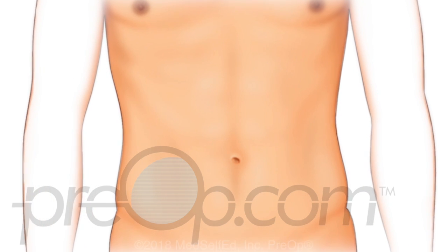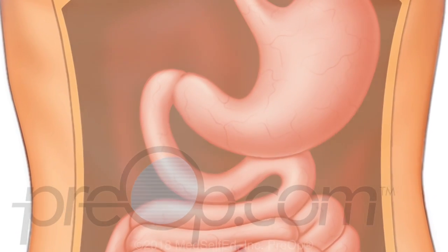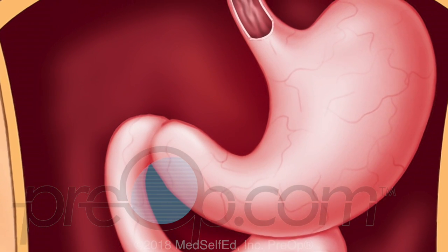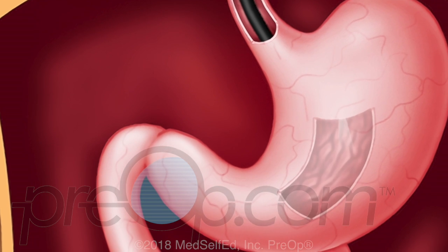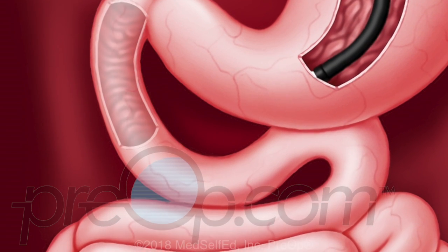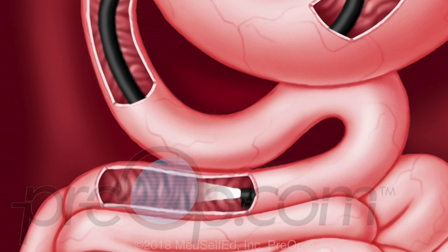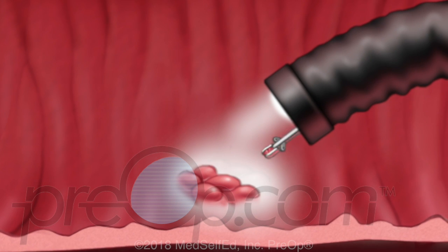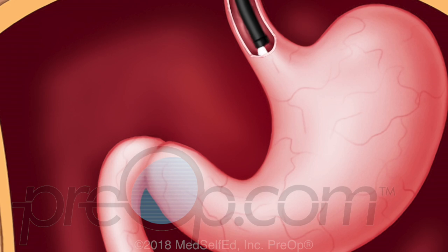Now let's look closer at the EGD procedure. To start, you will be positioned comfortably and given medication to help you relax or sleep during the procedure. A scope is gently guided through your mouth and throat, then down your esophagus to your stomach. You may feel some pressure or tugging, but you shouldn't feel pain. The scope continues further to the first part of the small intestine. The walls of the upper digestive tract are carefully inspected, small lesions may be removed for testing, and after all surfaces have been examined, biopsies and necessary treatments completed, the scope is withdrawn.